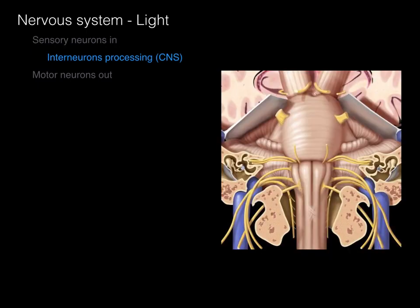For interneurons processing, we've talked about interneurons for reflexes in the spinal cord. For cranial nerves, the primary place where interneurons process information is in the brainstem, which consists of the midbrain — where the cerebral aqueduct is located — the pons, and the medulla oblongata. So when it comes to interneurons processing cranial nerves: midbrain, pons, medulla.